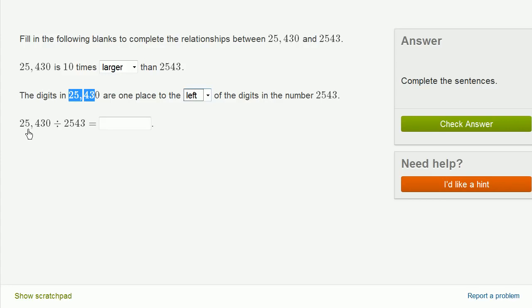Now finally, we're going to take 25,430 and divide it by 2,543. Well, we already know that the first number is 10 times larger than this number right over here. So literally, if you were to divide the smaller number into the larger one, you're going to get 10. This right over here is 10 times larger than this. We said that was the first part of the question.